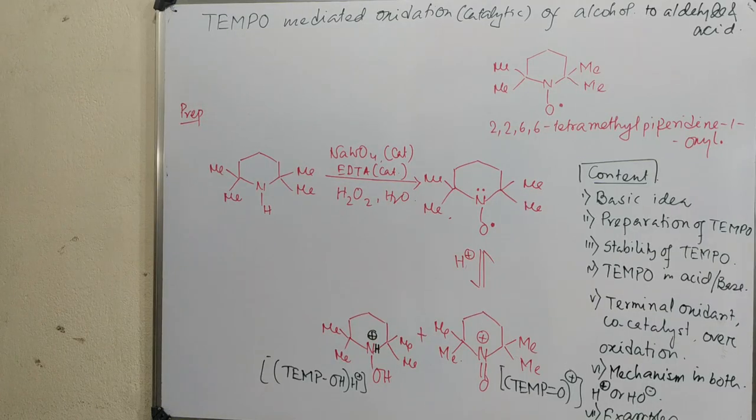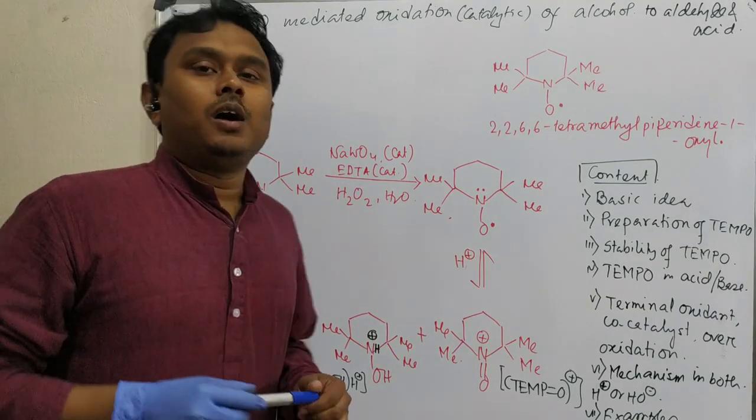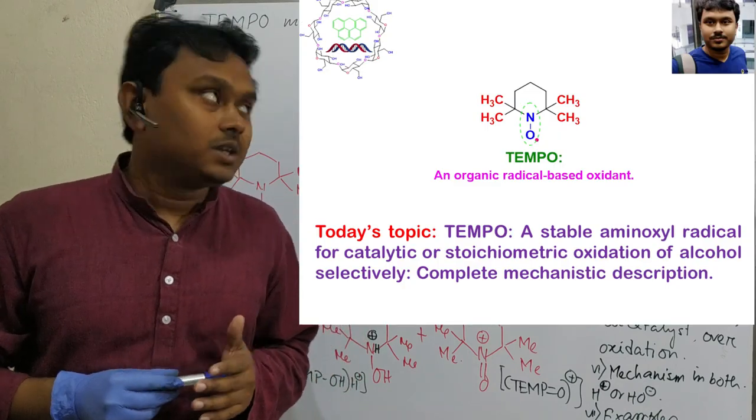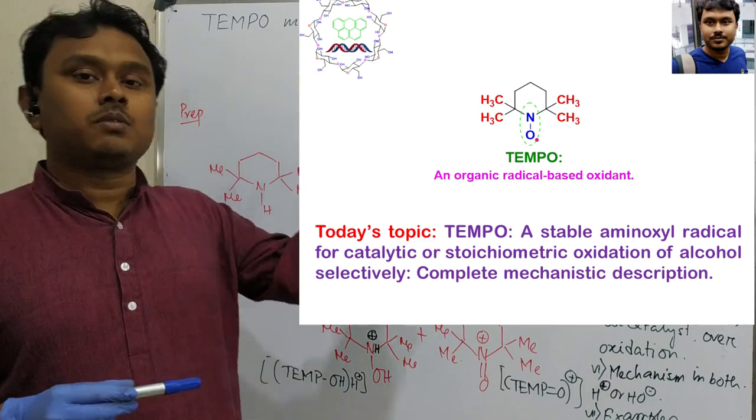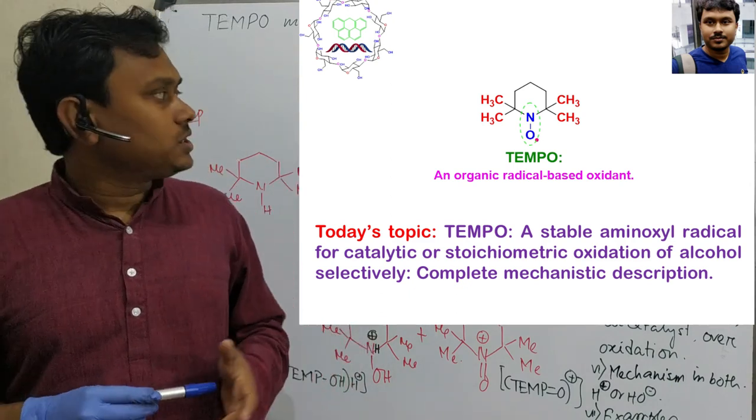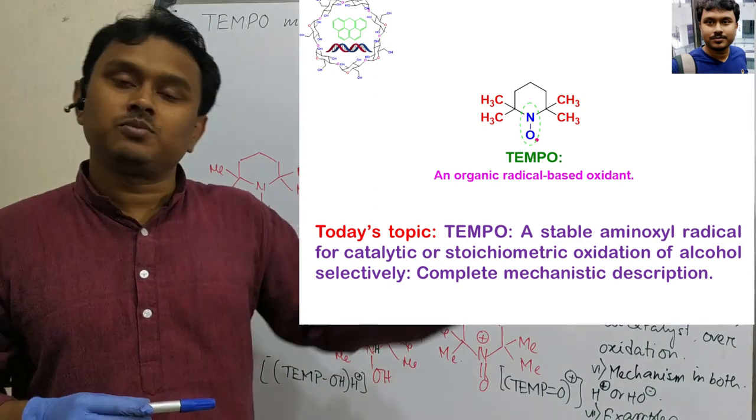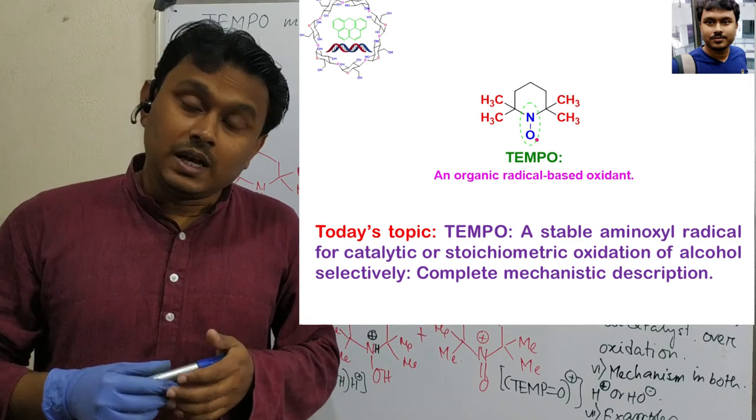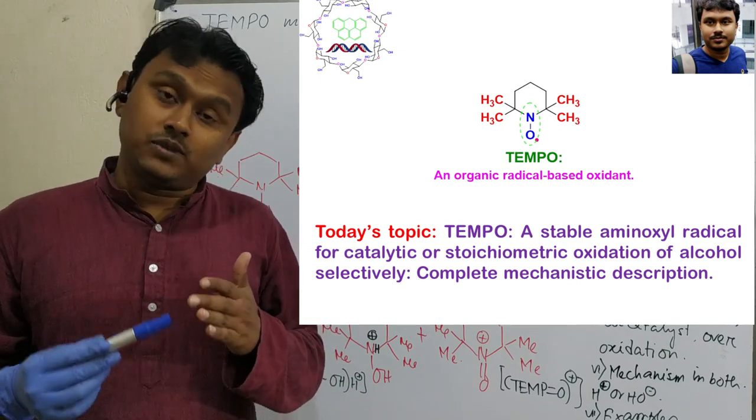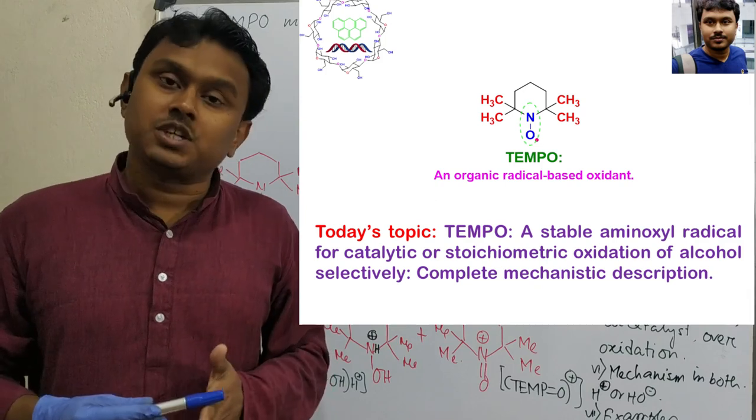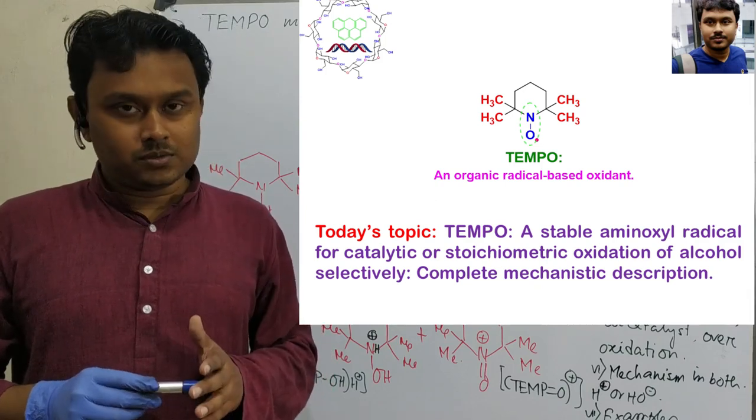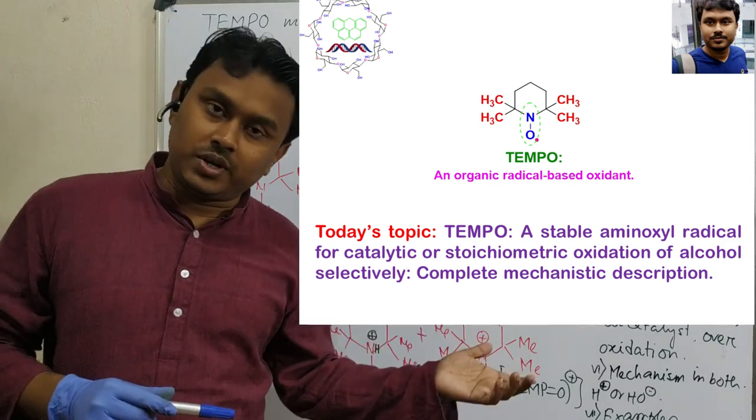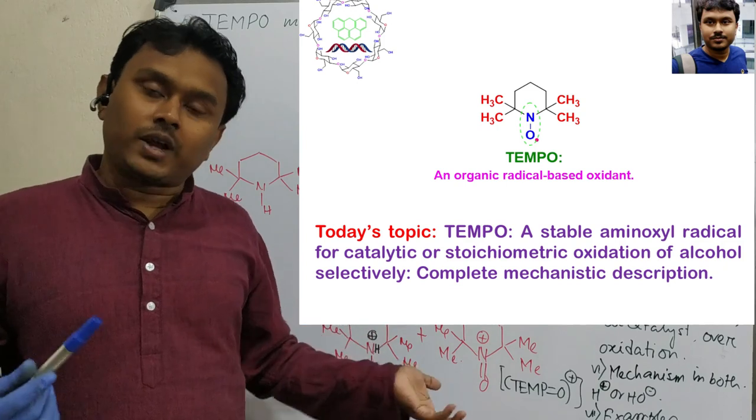Hello students, hope you all are fine. I am Dr. Tanwar Vishrash. So today we will discuss about a very important topic that is oxidation by TEMPO. TEMPO is a very famous reagent, its full form is 2,2,6,6-tetramethyl-piperidine-1-oxyl. It is a radical and better to say it is a stable radical. So we will discuss about this reagent and its use for organic synthesis.